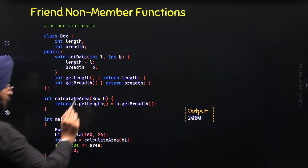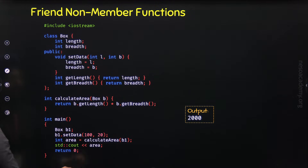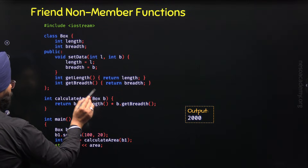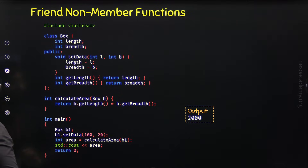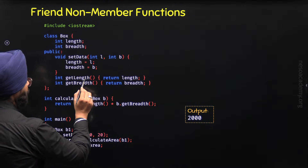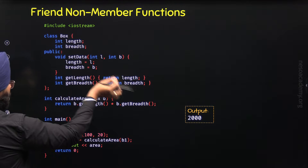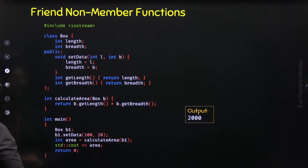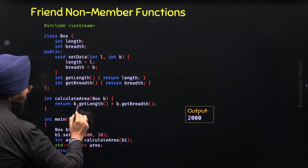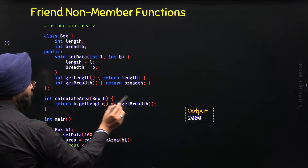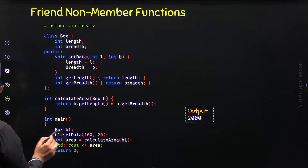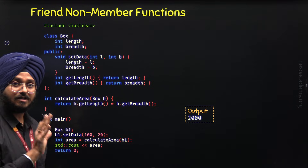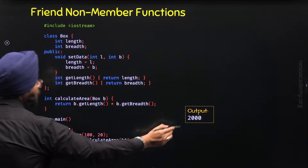Why do we get 2000? Because we passed object b1 to calculateArea, and its copy is stored in object b. getLength then accesses length, which was set to 100 via setData, and returns 100. Similarly, getBreadth returns 20, since breadth was set to 20. Multiplying them gives 2000. So we have indirectly accessed the private members within the non-member function.